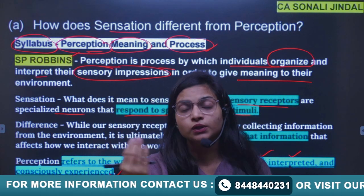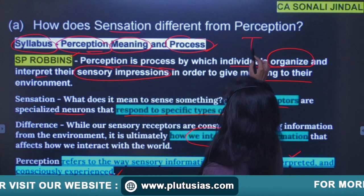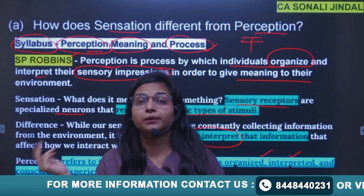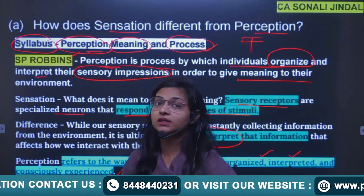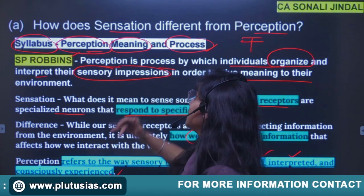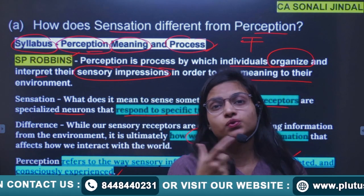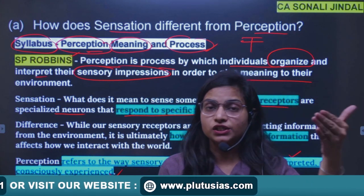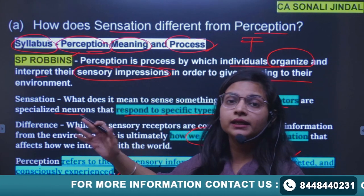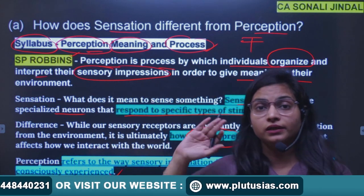Sensation means sensory receptors are specialized neurons that respond to a specific type of stimuli. While our sensory receptors are constantly collecting information, how we interpret it depends on our personality and how we are interacting with our surroundings. Firstly, you can define each in one or two lines, then mention how they are different. You can make a chart, and even write some similarities. By drawing the diagram showing sensation as the first step and perception as the last, you can complete this answer. If you have covered the syllabus, you can definitely write it.